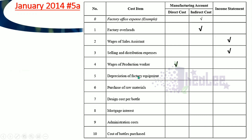Purchase of raw materials is a direct cost — we need raw materials to produce the item, so they are linked to the item being produced. Design cost per bottle is traceable to the item being produced, so it is a direct cost. Mortgage interest is used in the income statement as an admin expense. Administration cost is definitely an income statement item. Cost of bottles purchased is a direct cost — we need packaging to get the product out to customers, and it is linked to the item being produced.